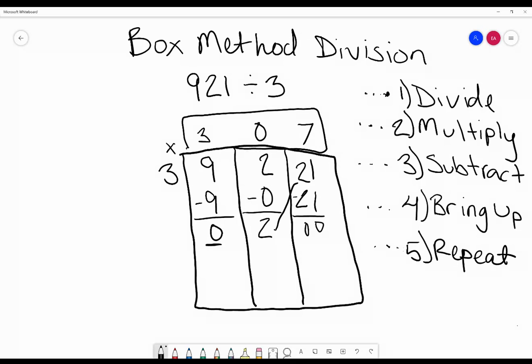And up here at the top we have our quotient, so 921 divided by 3 equals 307.